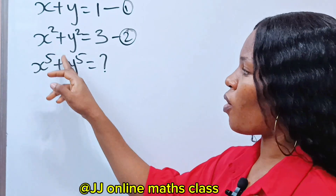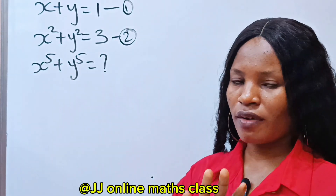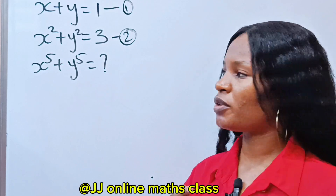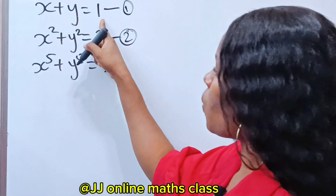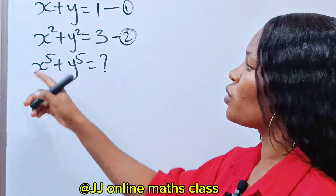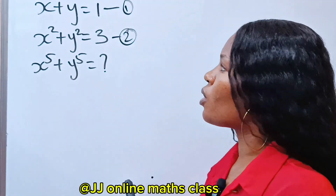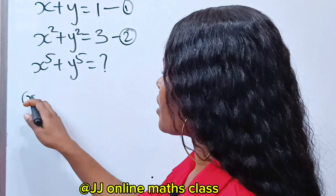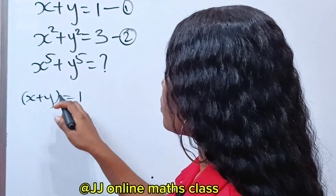Let's solve for the value of x to the power of 5 plus y to the power of 5. Just follow me and you are going to see how this is going to be done. We need equation 1 to get x to the power of 3 that we'll use to multiply. According to equation 1, we have x plus y is equal to 1.